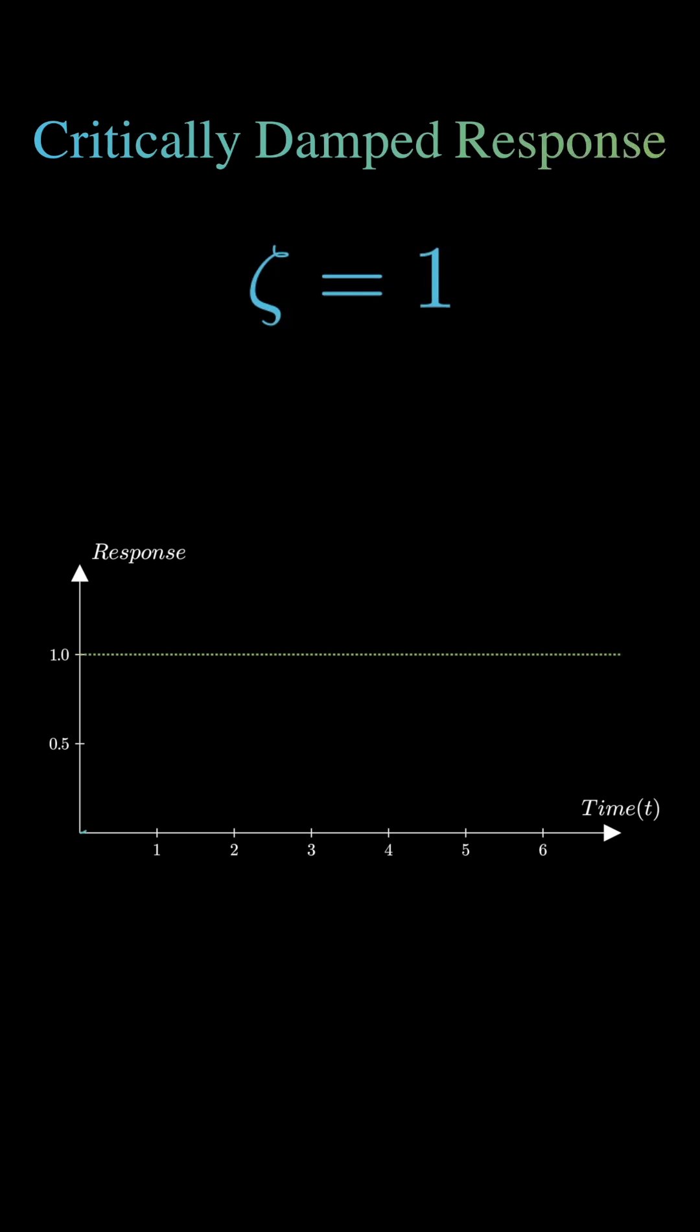When zeta equals 1, the system is critically damped. This is the sweet spot for reaching the target value quickly without any overshooting. A critically damped response is often the goal in many control systems because it's fast and stable.